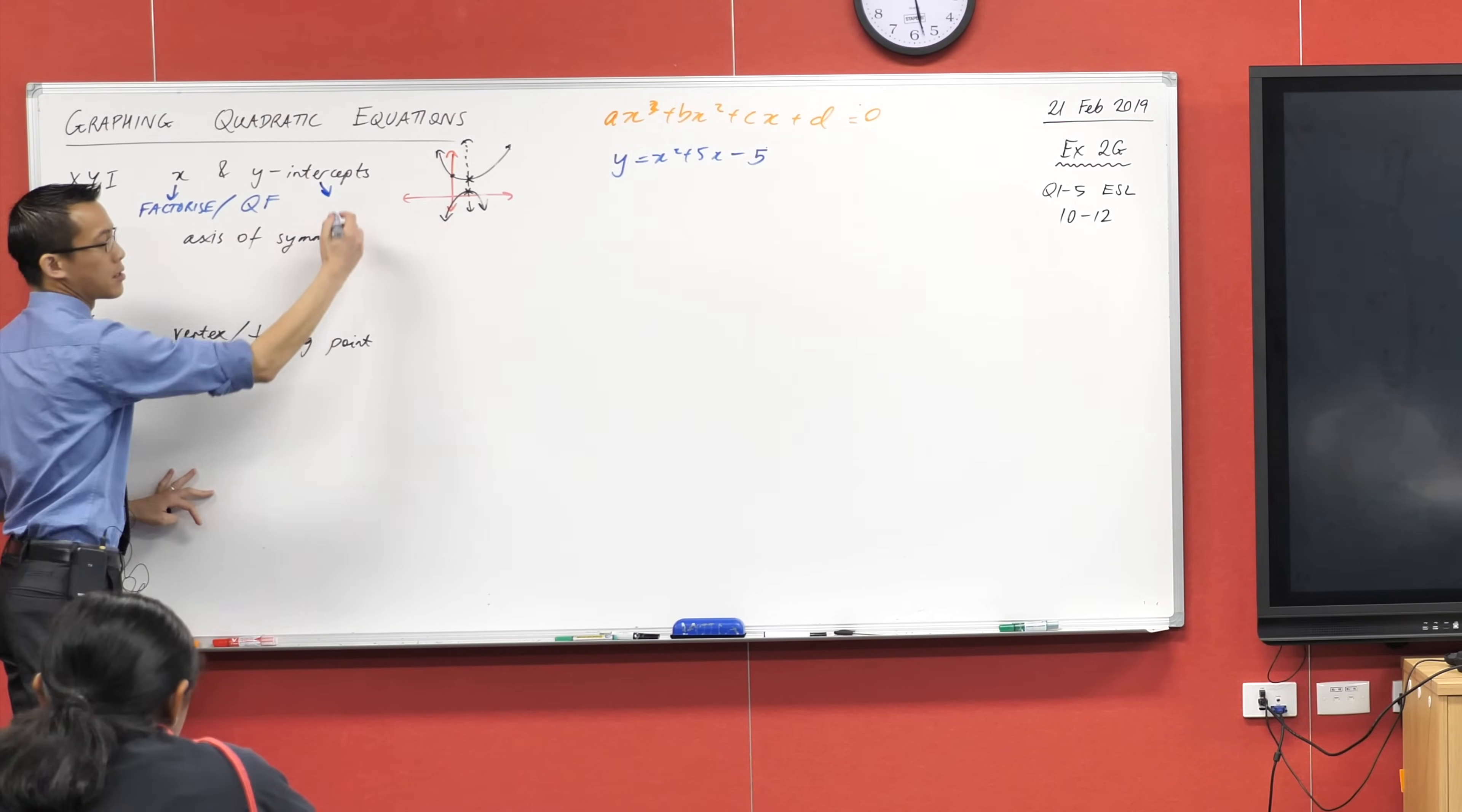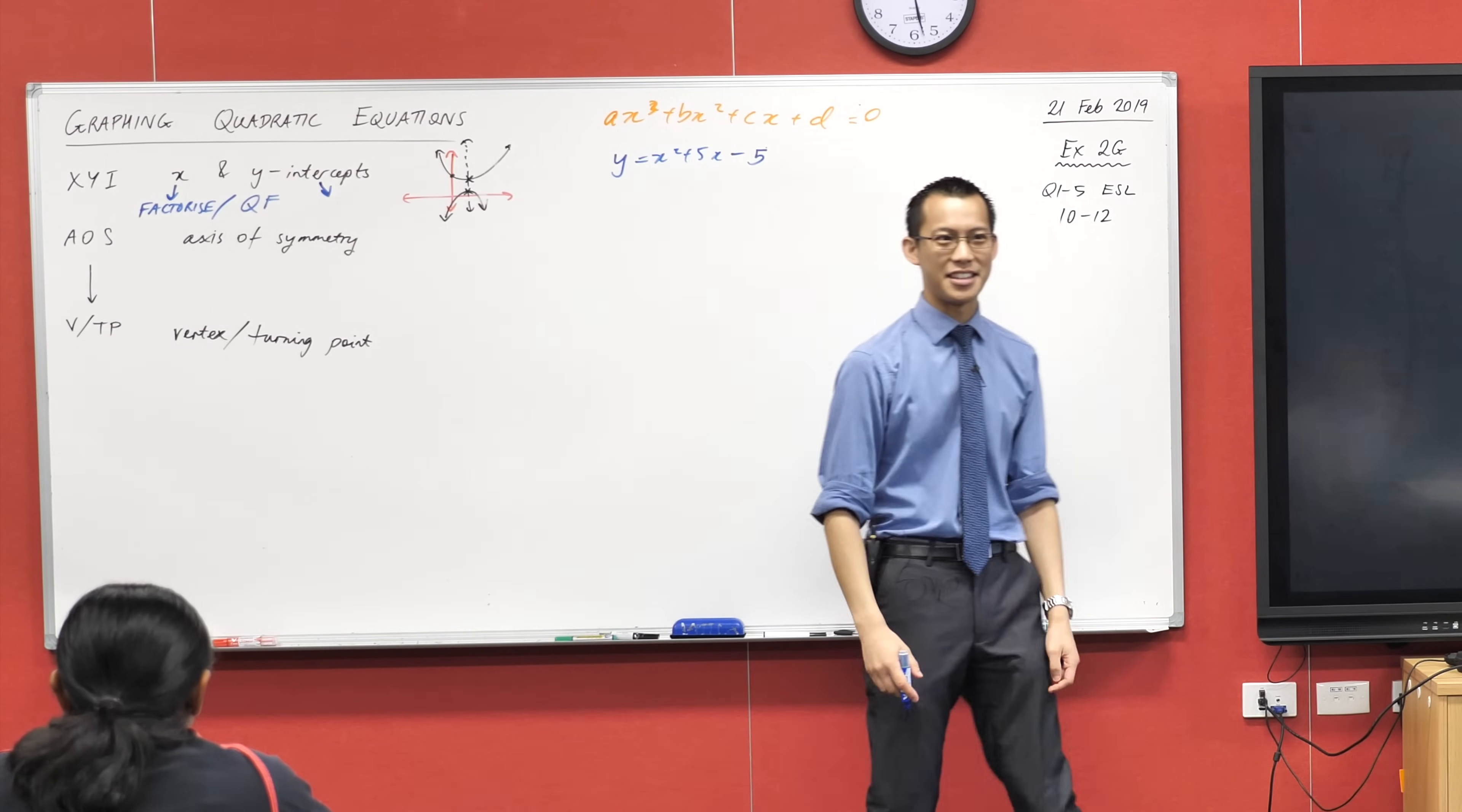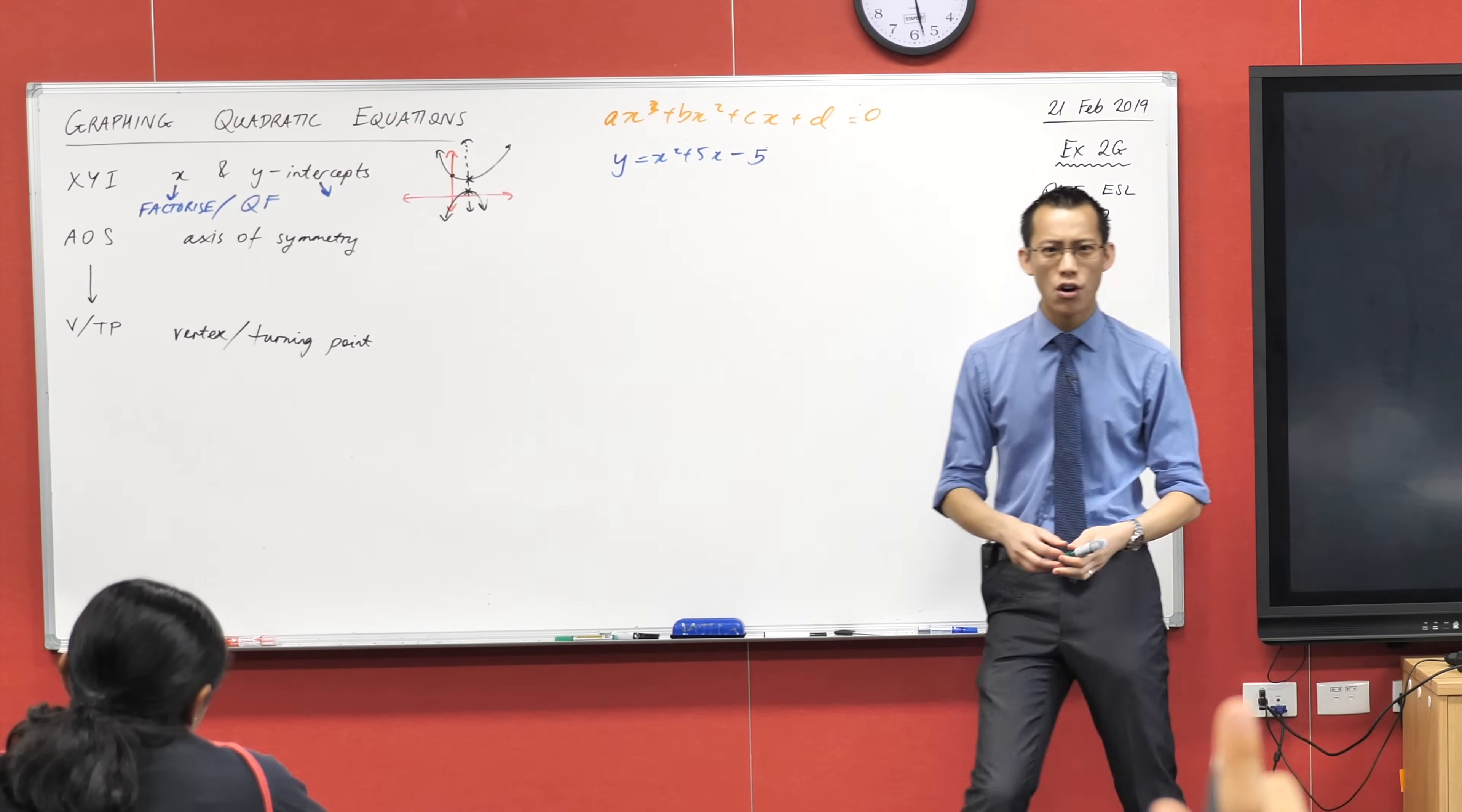What about the y-intercepts? How do you find those? Sorry, I should say y-intercept. Rassan? Isn't it always the last number from the rabbit? Ah, this is interesting. Yeah, we're looking for the y-intercept.